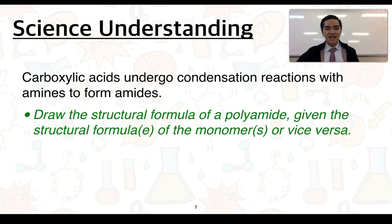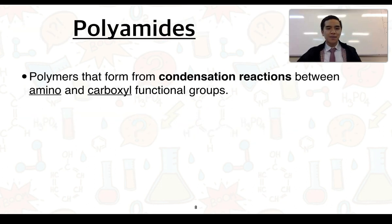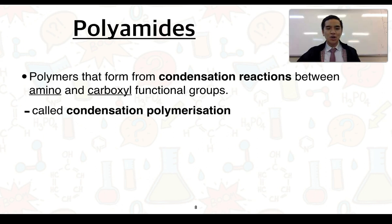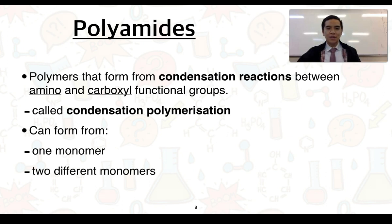For the next science understanding, we'll look at how to draw the structural formula of a polyamide given the structural formula of the monomer or monomers, or vice versa. Like polyesters, polyamides are polymers that also form from condensation reactions. However, they form between amino and carboxyl functional groups. Another name for these reactions is condensation polymerization. This can form from either one monomer or two different monomers.